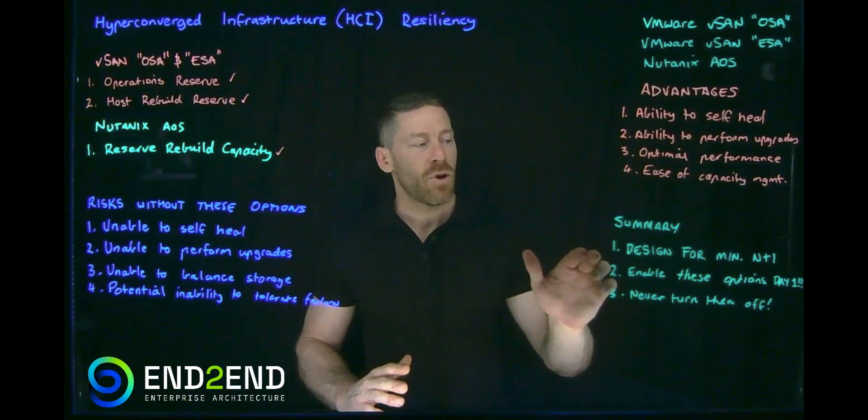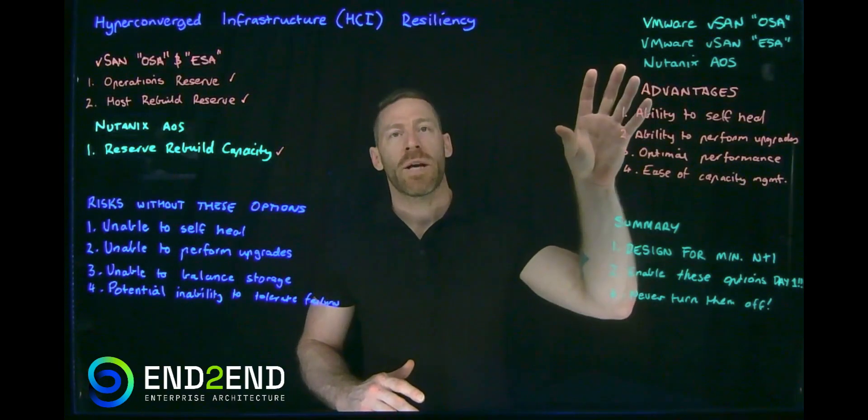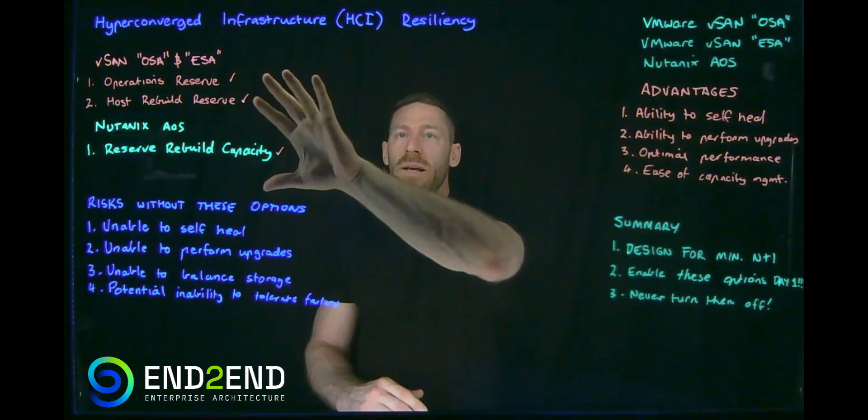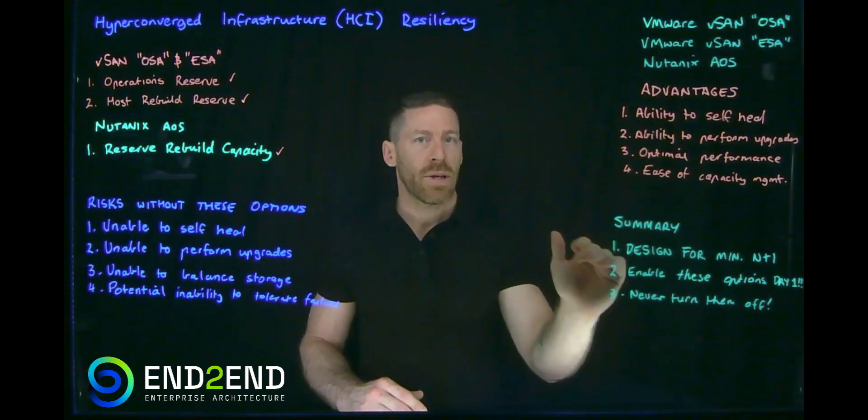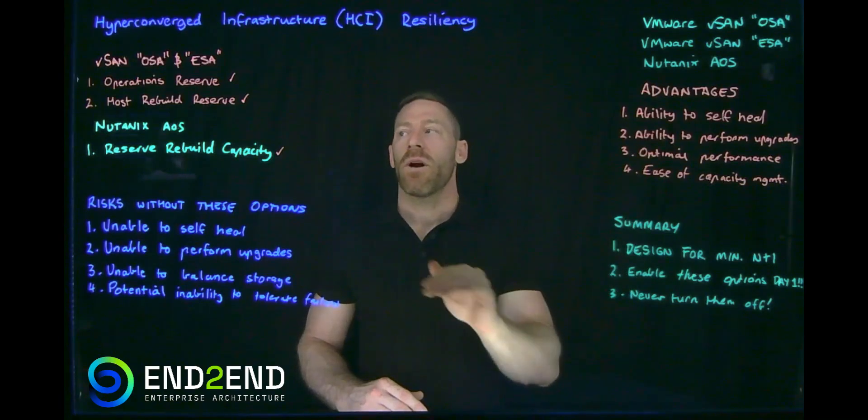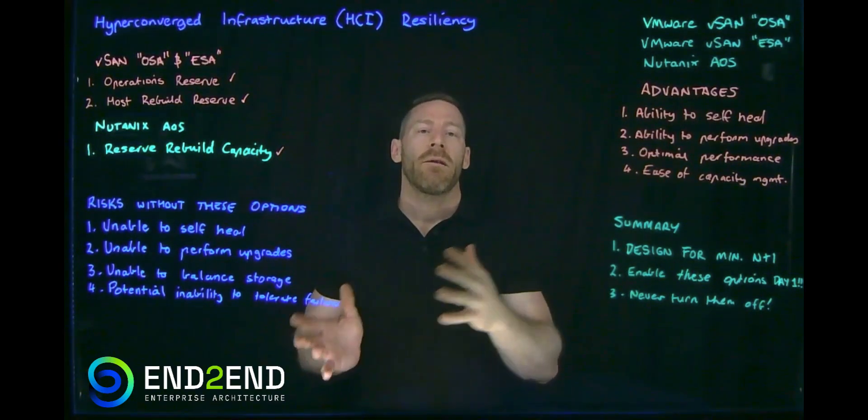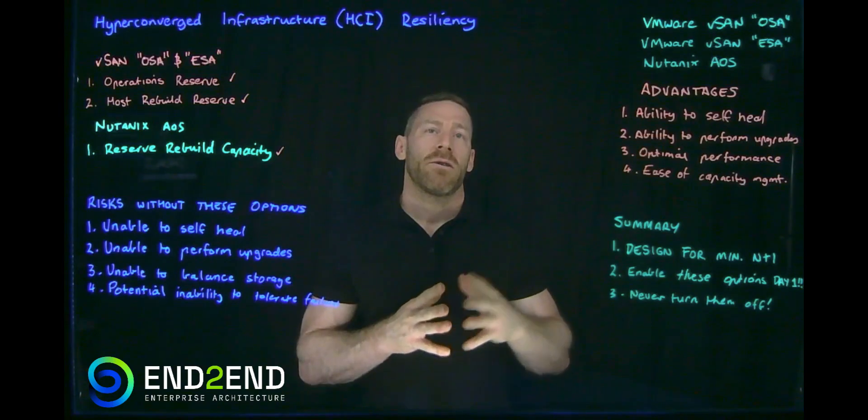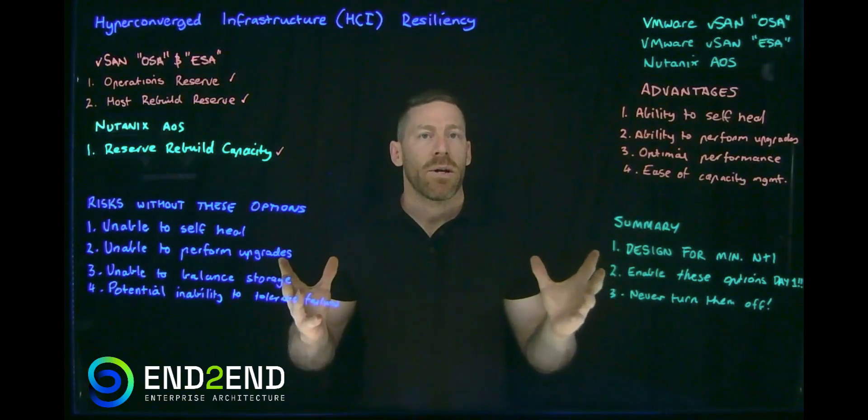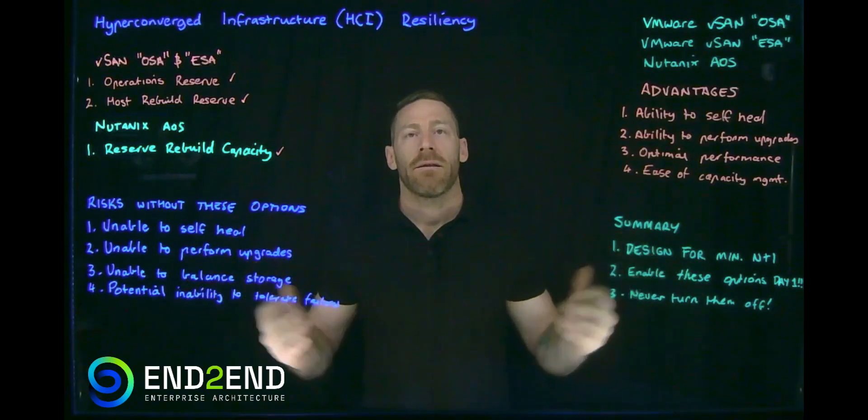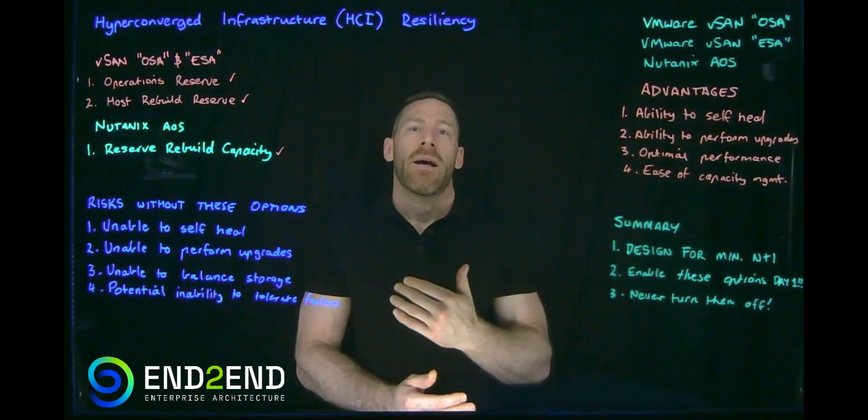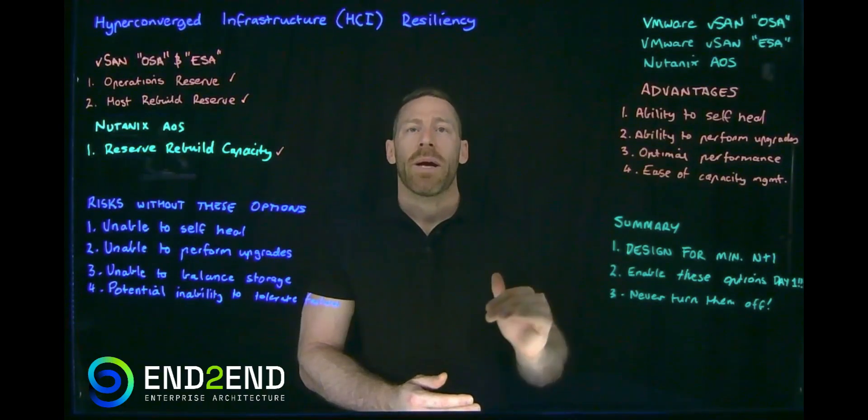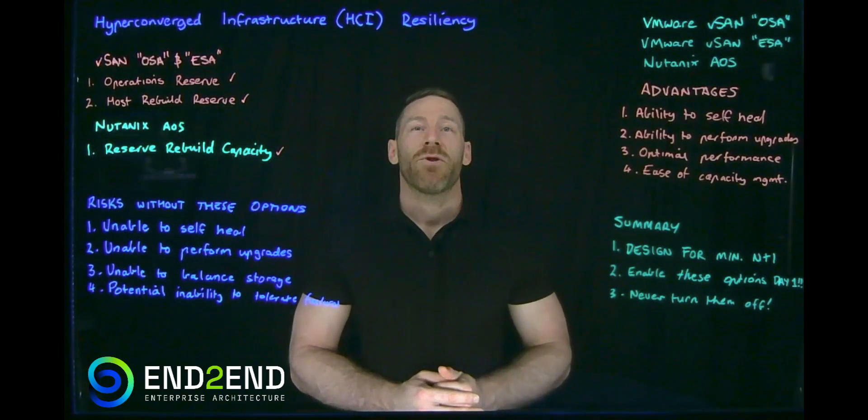Alright, in summary, design for a minimum of N+1 with either Nutanix or vSAN, whether it's OSA or ESA, the same rule applies. Make sure we enable these settings always and do it day one. Don't wait till day two or day 365. And lastly, don't turn them off. If you're running low on capacity, you need to make sure you're looking at your capacity management process and procedures and you need to start ordering that new hardware. Otherwise, you're just going to paint yourself into a corner and get yourself in trouble. So don't turn them off as a get out of jail free card because it'll just put you into more trouble later. So assume that that 75 terabytes is your maximum and plan accordingly. Thanks for joining me on this series.